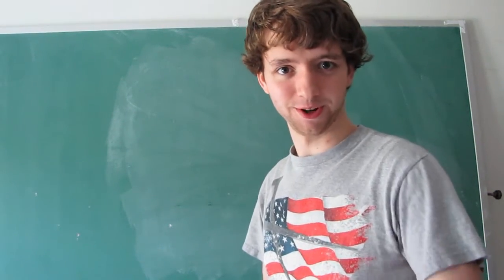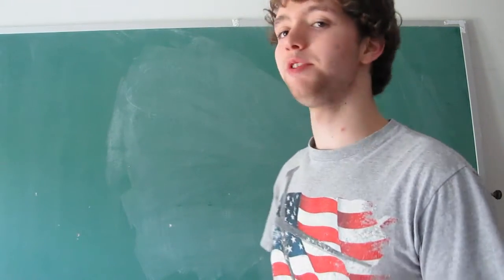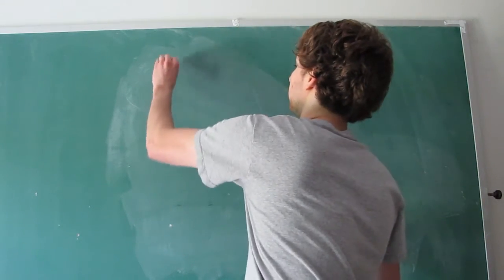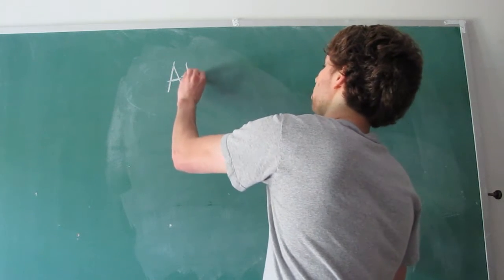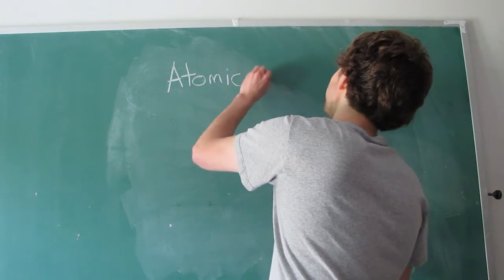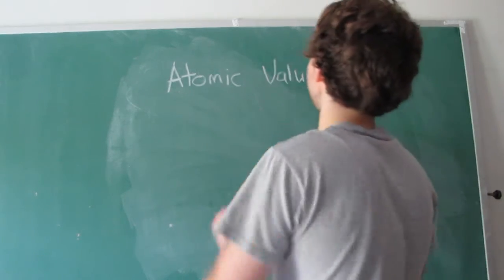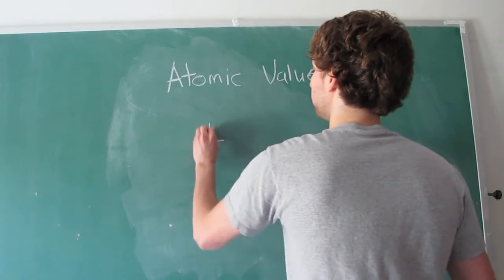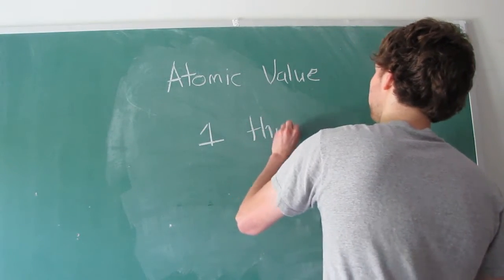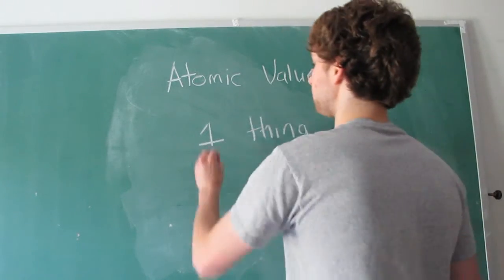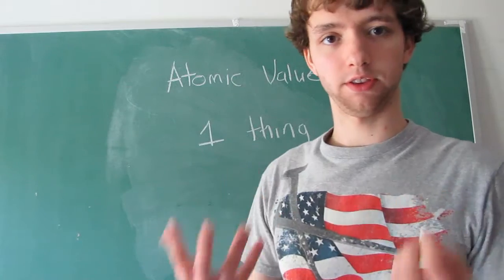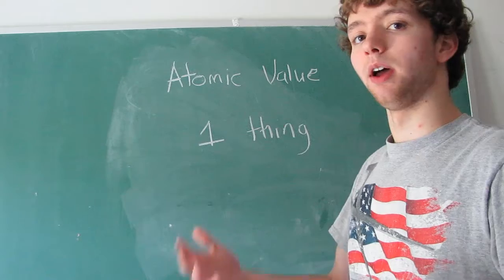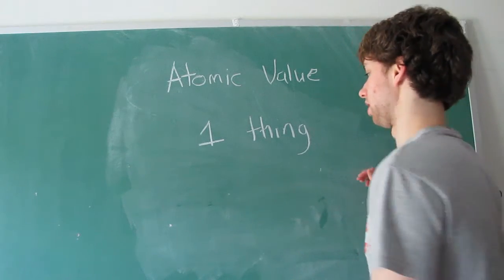Hey, what's up everyone, my name is Caleb. This video will be talking about atomic values. So atomic values basically just mean that the value stores one thing. Everything we store in a database should be one thing. When we have columns, they're about one thing. All of the values within that column are one thing.